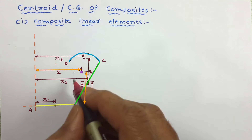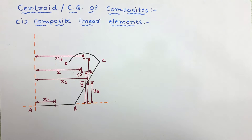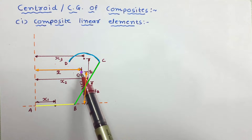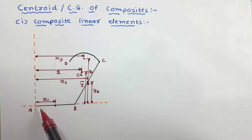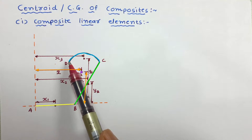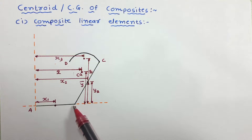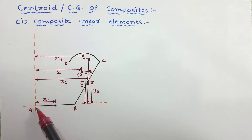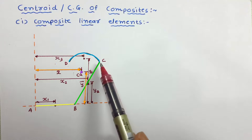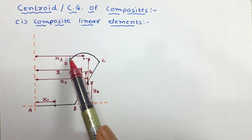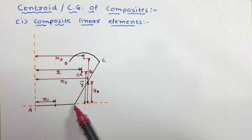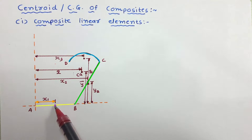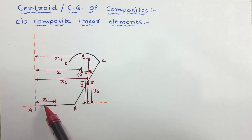This is the centroid of the complete body which we want to work out — we are interested in working out X̄ and Ȳ. These are simple geometrical linear elements, also called wires. This point is the centroid of wire A-B, and its distance from the reference axis is X̄₁.